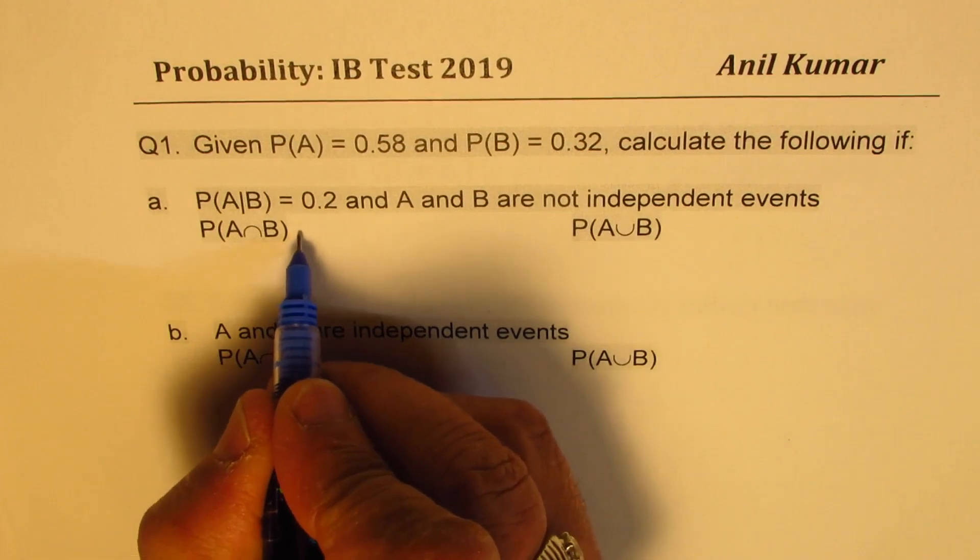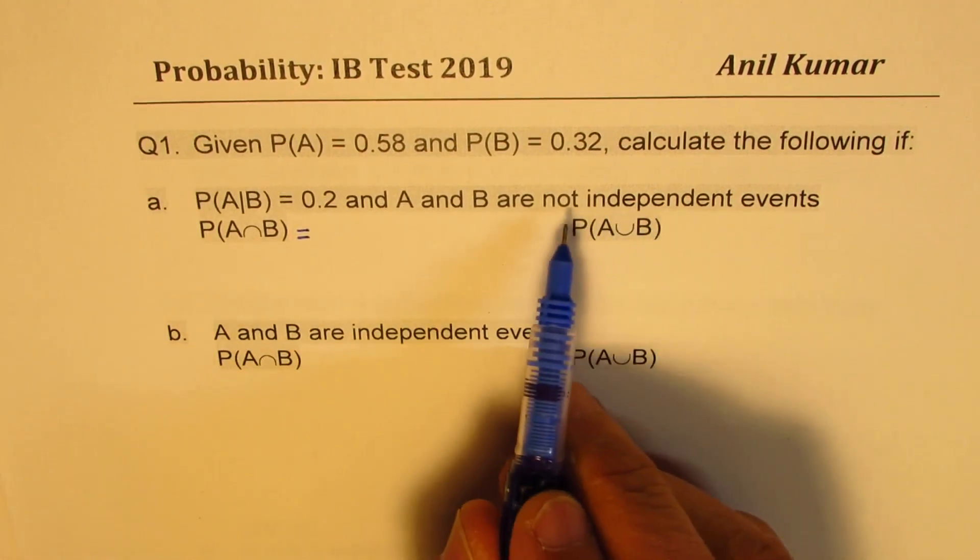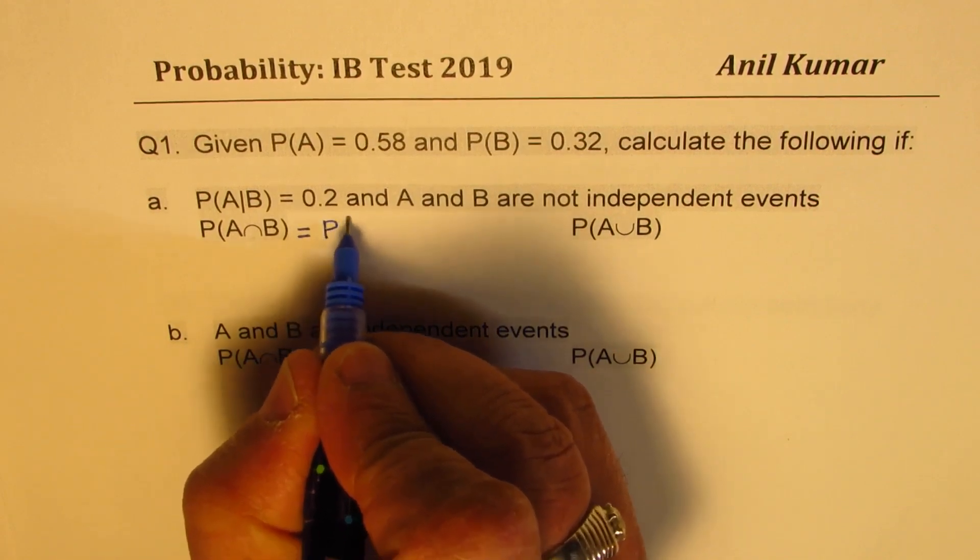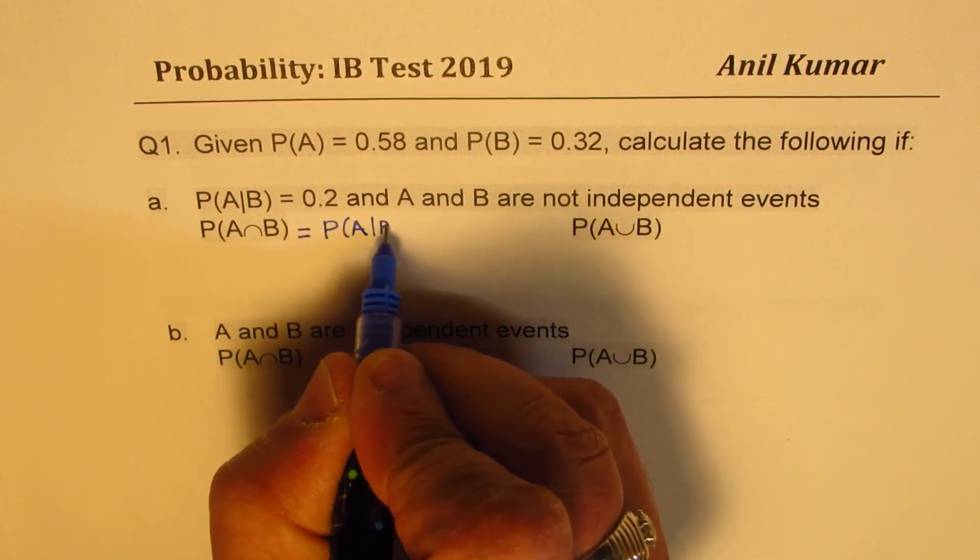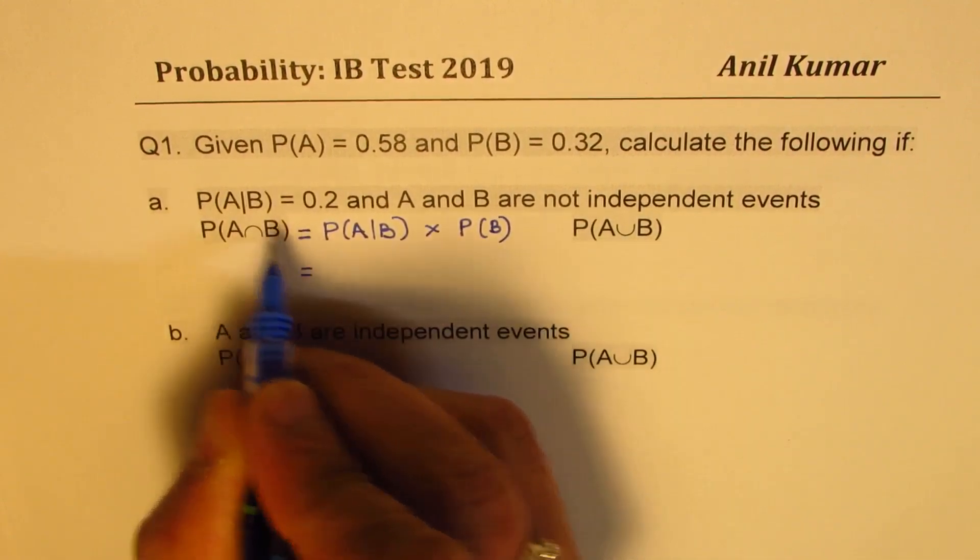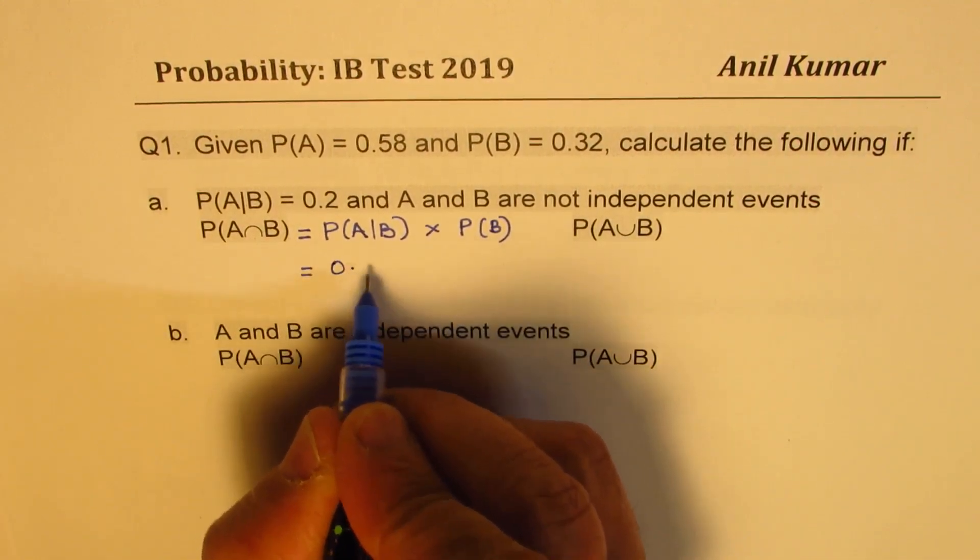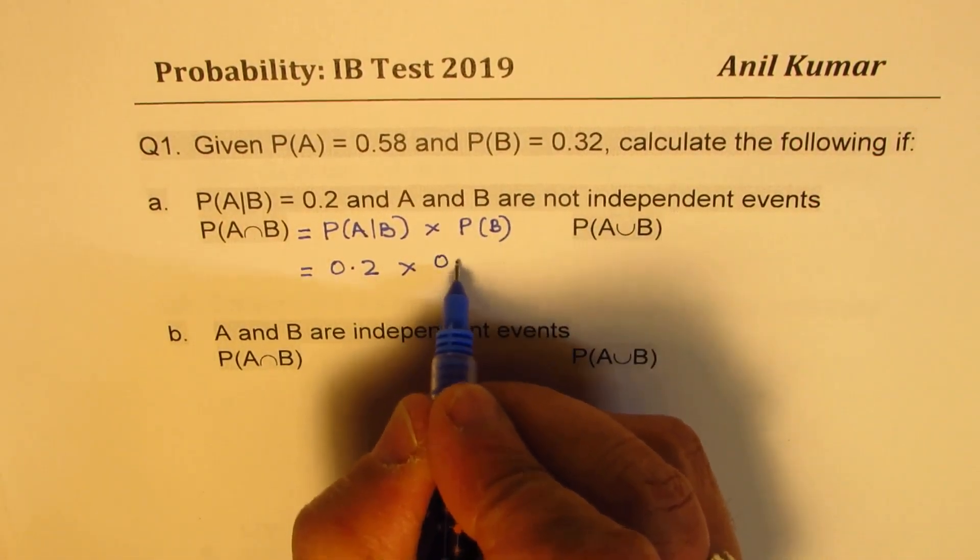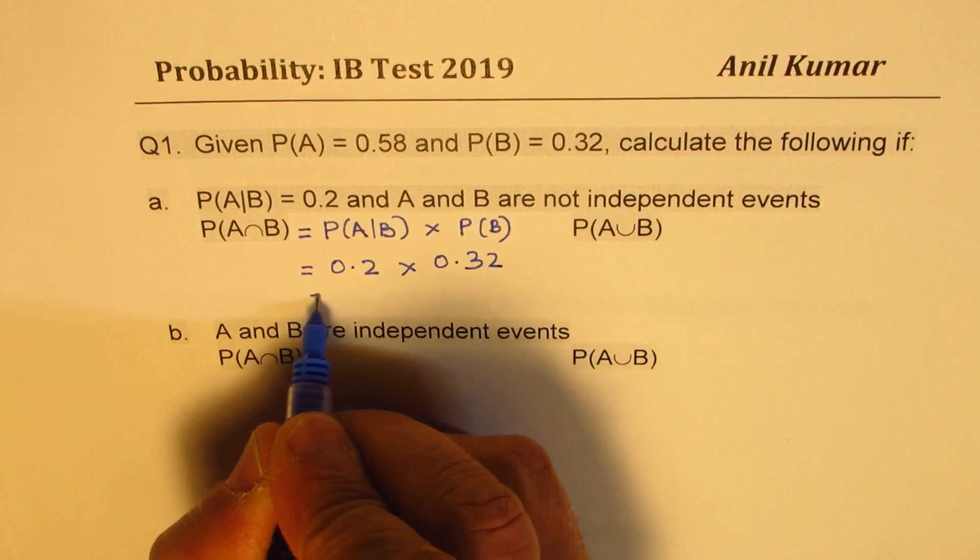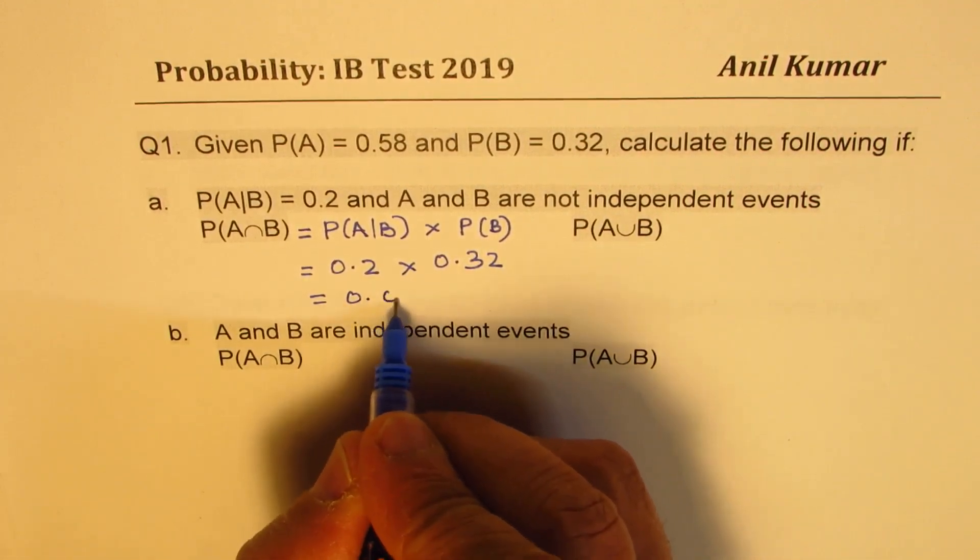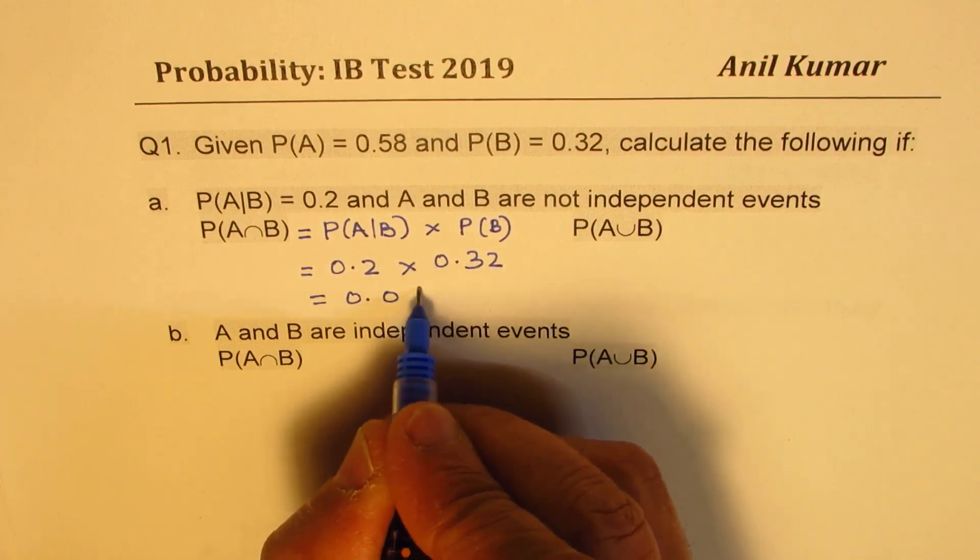So probability of A and B, when they are not independent events, should be probability of A given B times probability of B. So probability of A given B is 0.2 times probability of B is 0.32. So you multiply them and get three decimal places: 0.064.